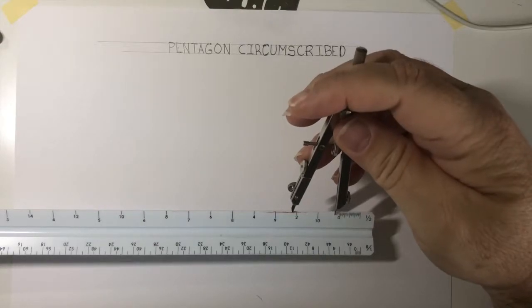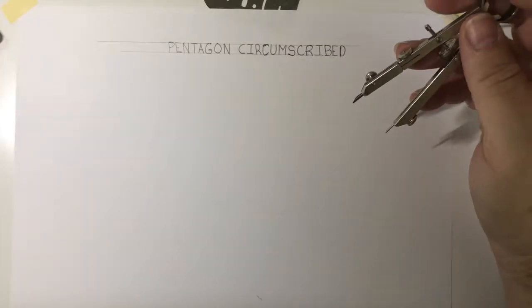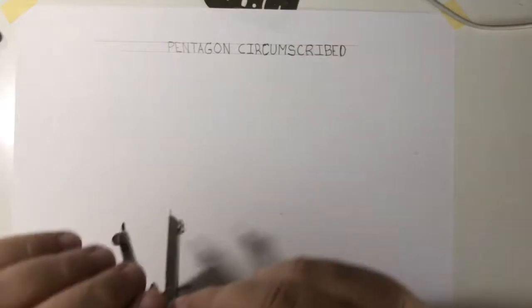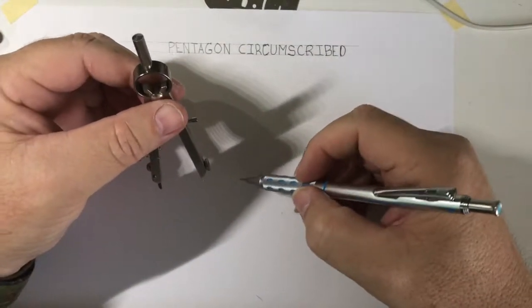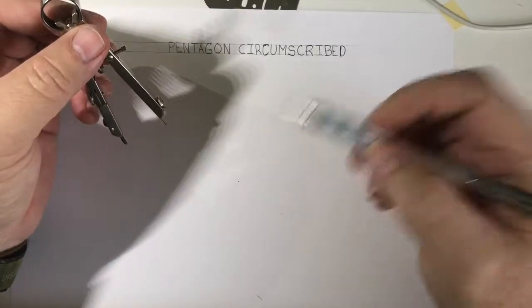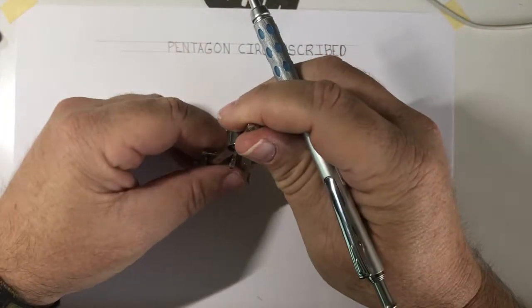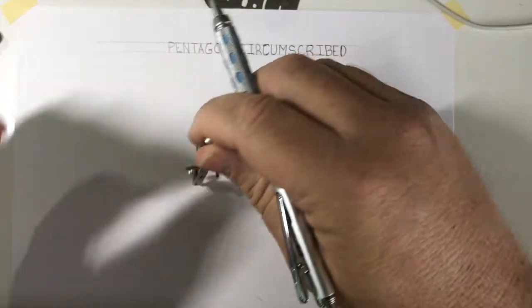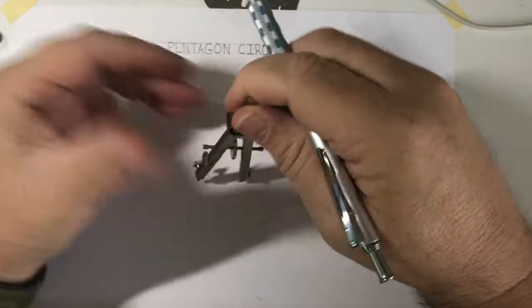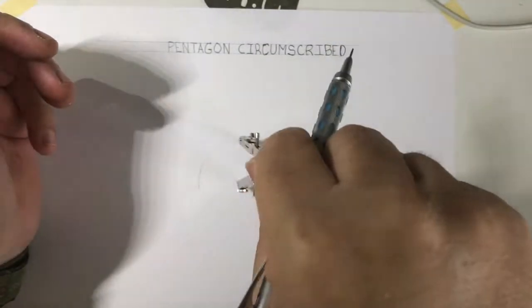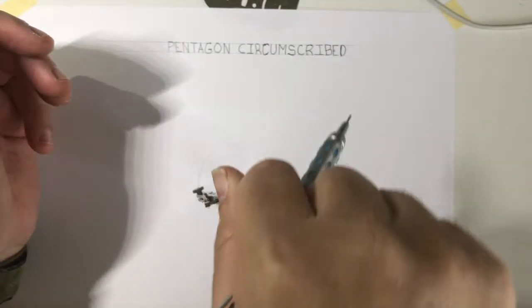That's about as perfect as I can get. I'll just pick a center spot. I want to mark it because I'm going to use that center spot as a point and I don't want to lose it. And draw myself a circle.